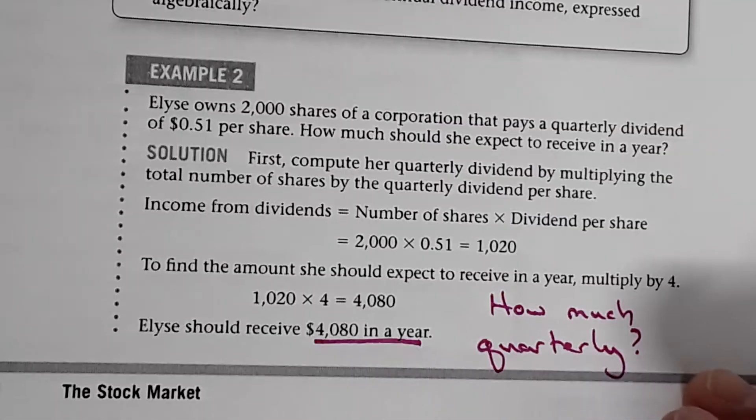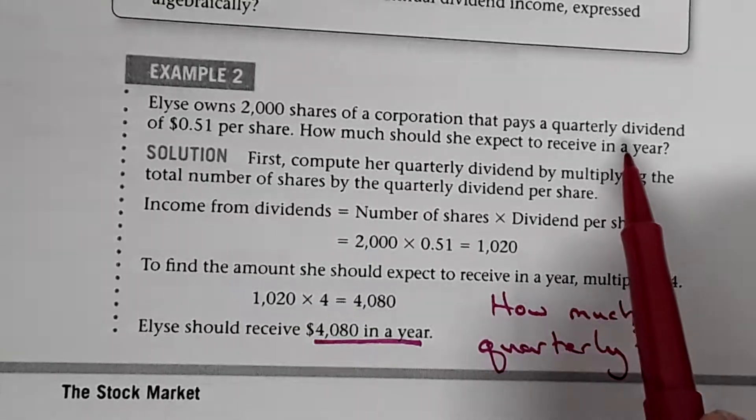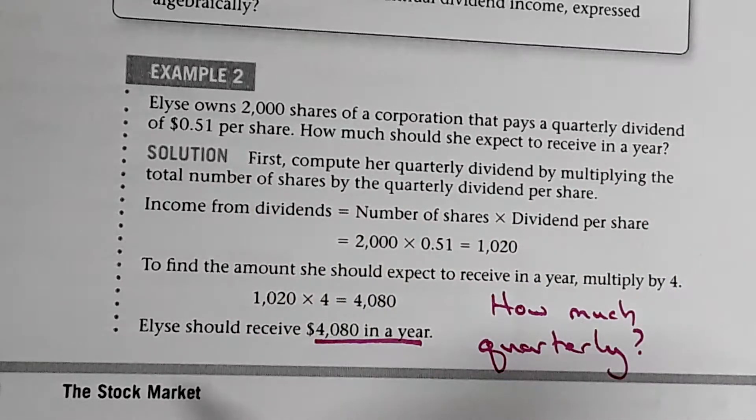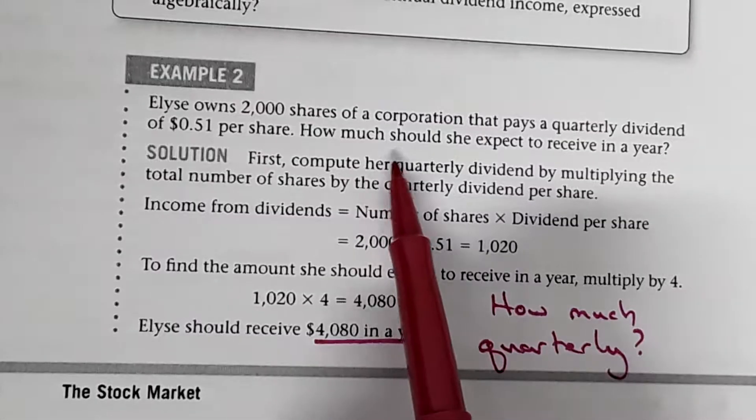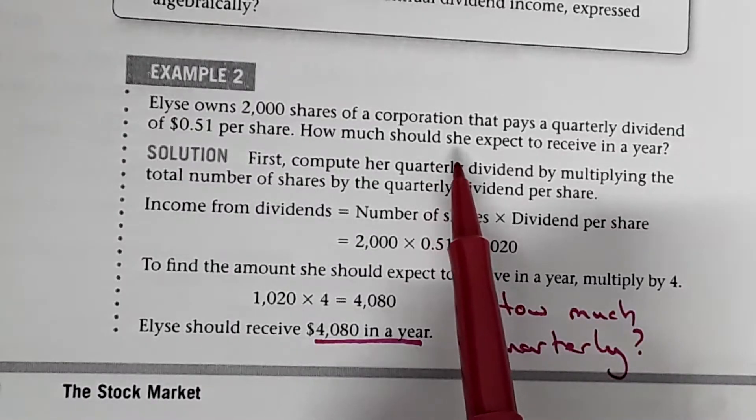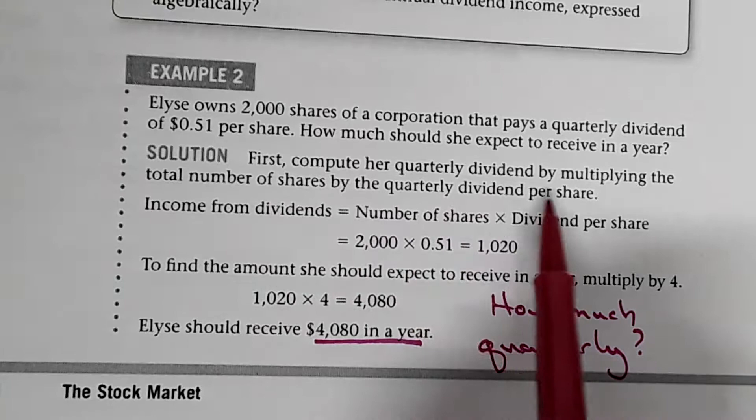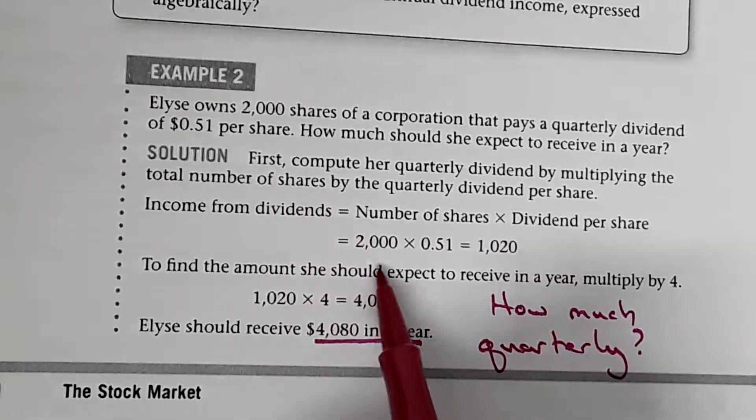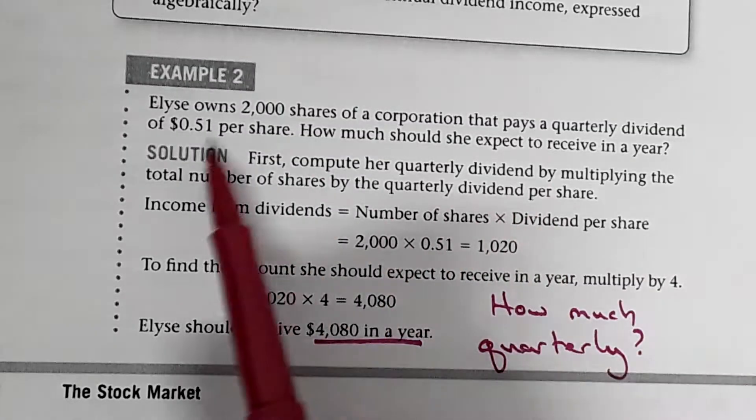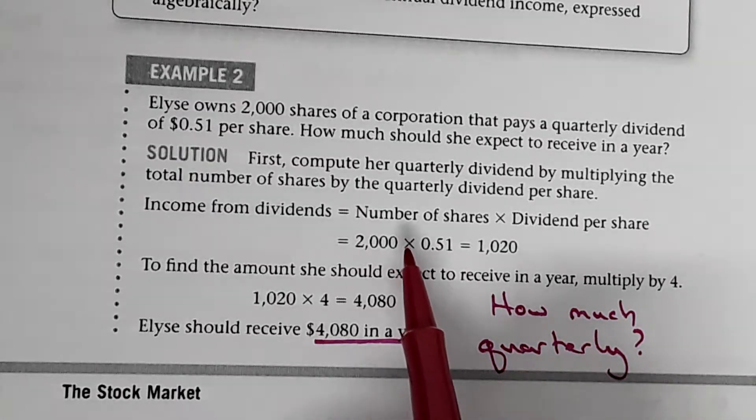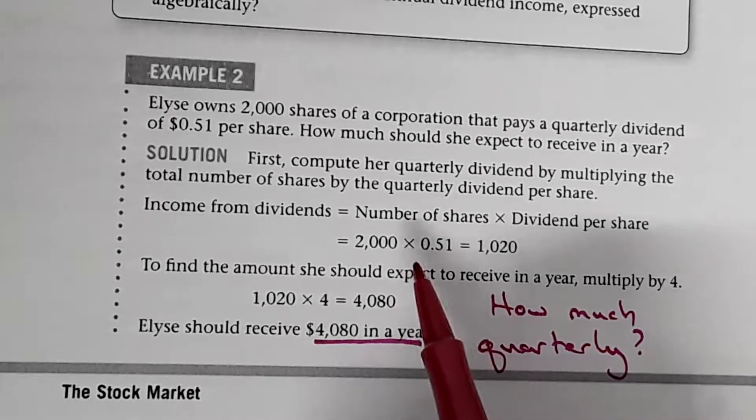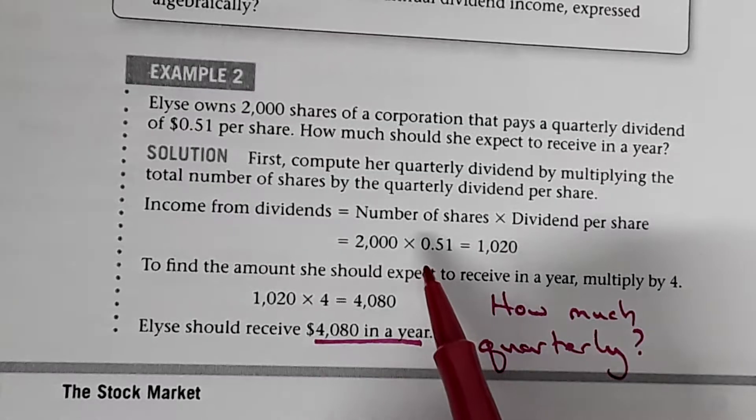Elise owns 2,000 shares of a corporation that pays a quarterly dividend of $0.51 per share. How much should she expect to receive in a year? Compute her quarterly dividend by multiplying the number of shares by the quarterly dividend. So she owns 2,000 shares and this is what she gets quarterly. That's every three months. Think quarters. There's four quarters in a dollar. So every quarter is three months.